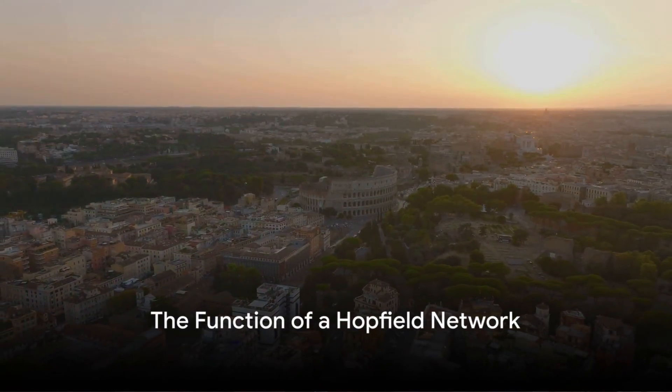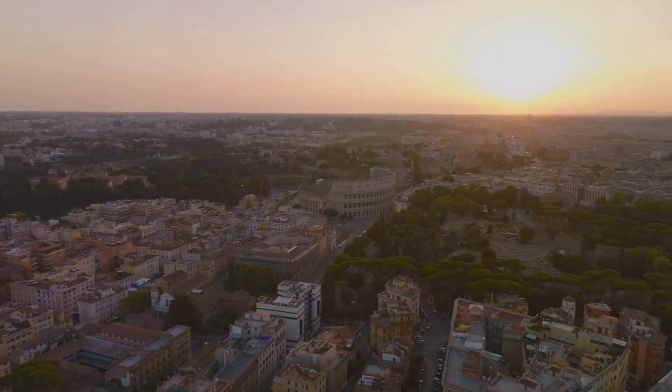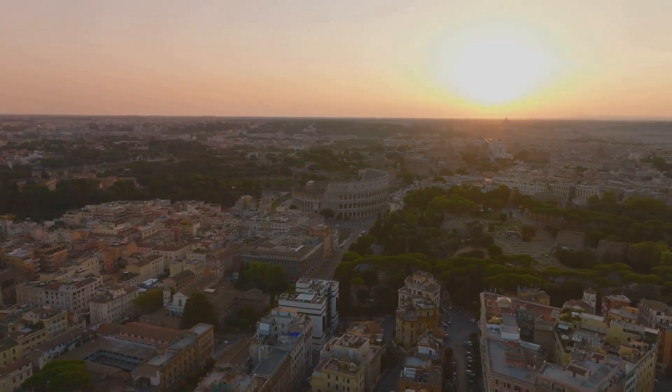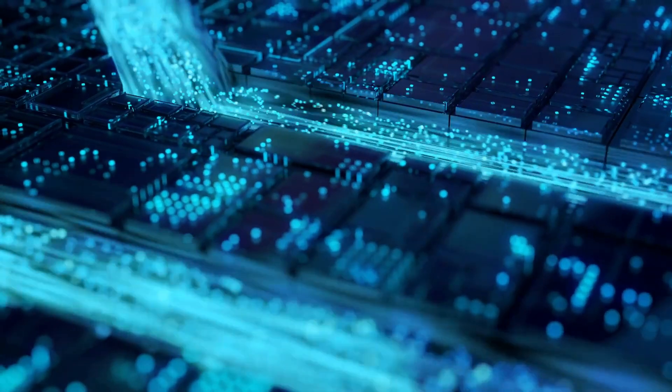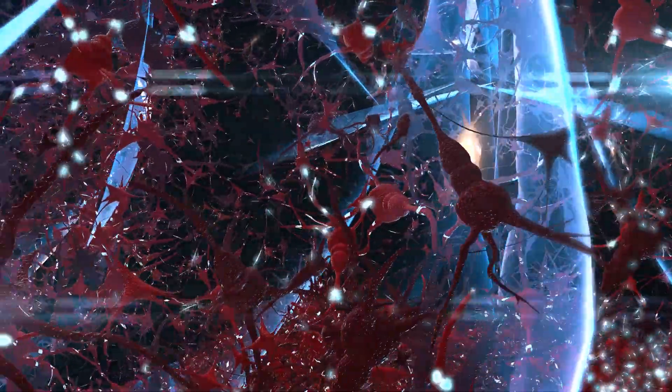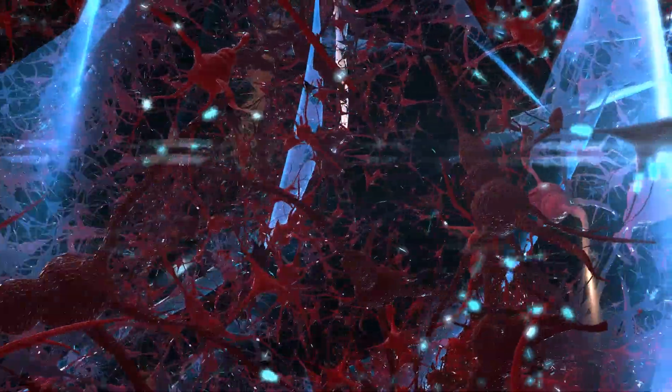Imagine a city where all roads lead to Rome, and no matter which direction you take, you'll always end up in the same place. That's a bit like how a Hopfield network functions. It's a type of recurrent artificial neural network, which means it operates in a cycle, constantly feeding information back into itself.